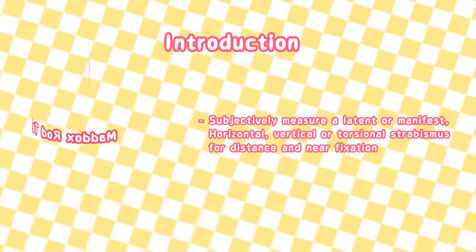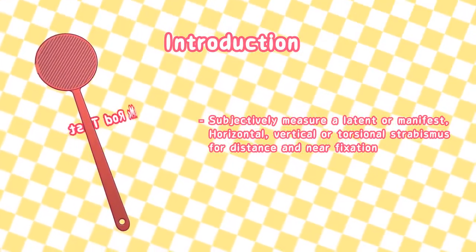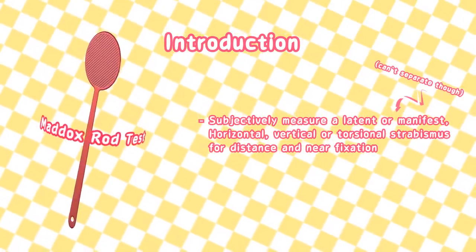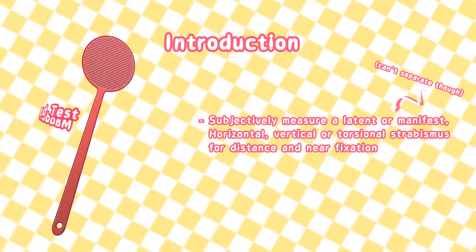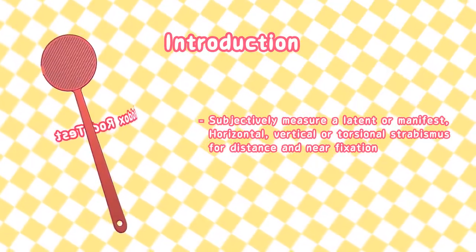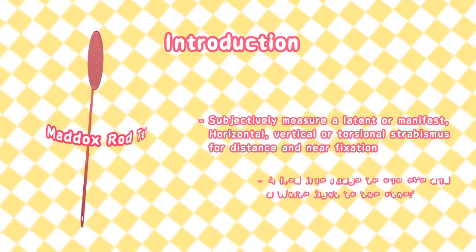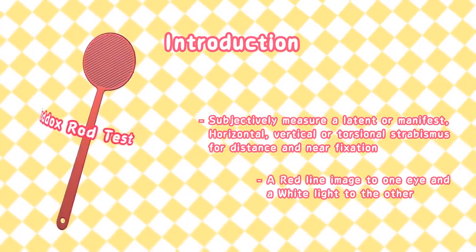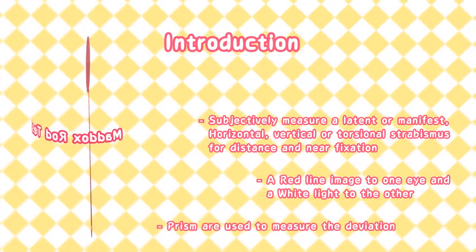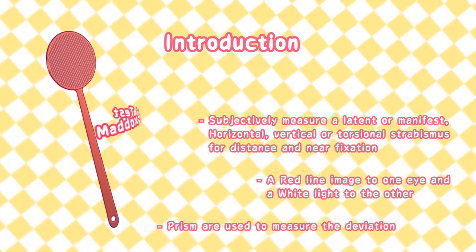The Maddox Rod test can be used to subjectively measure a latent or manifest horizontal, vertical, or torsional strabismus for distance and near fixation. The test is based on the principle of diplopic projection. Dissociation of the deviation is brought about by presenting a red line image to one eye and a white light to the other. Light prisms are used to superimpose these and effectively measure the angle of deviation.